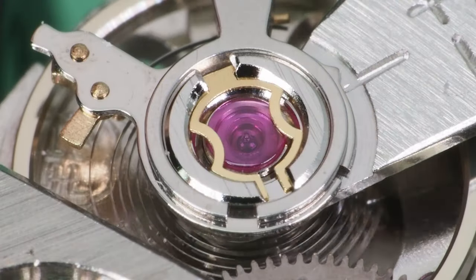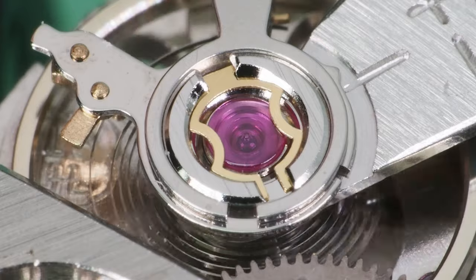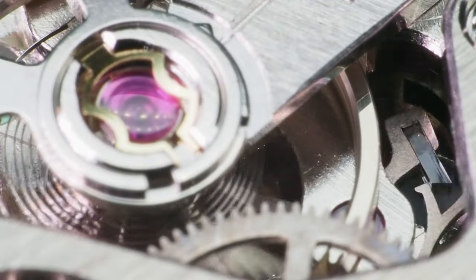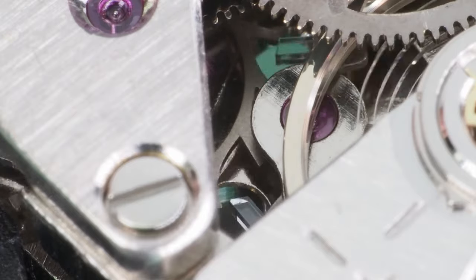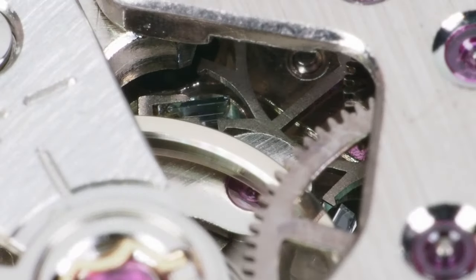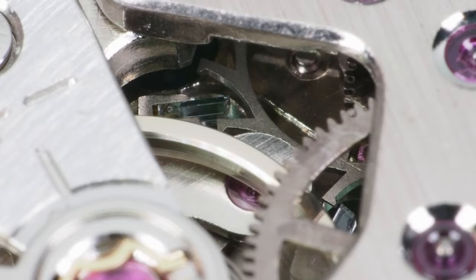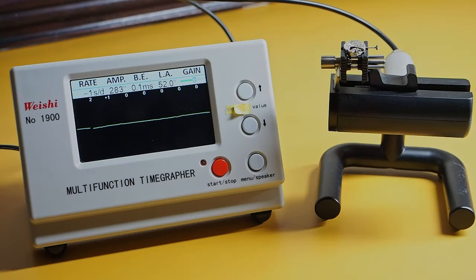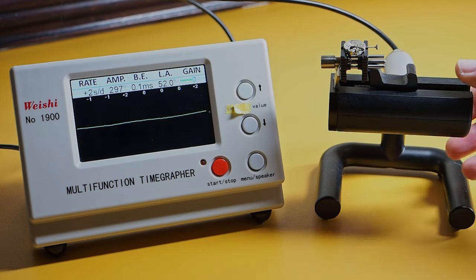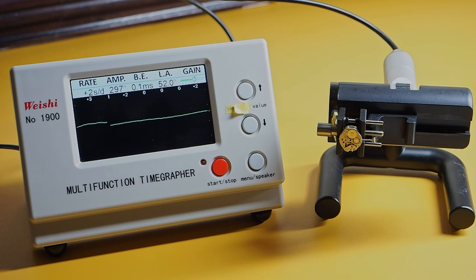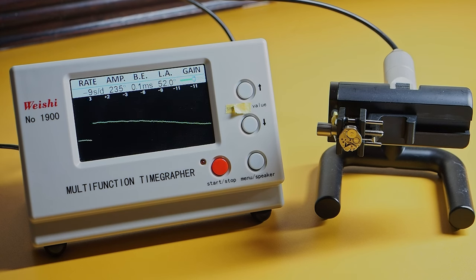Now let's have a look at the escapement in action. I've regulated it and it's been running for a few minutes. As you'd expect the timing and amplitude is better in dial down and dial up positions than when the movement is on its side but it's not running too badly for a standard unadjusted movement. I sped up the footage so you can see it in several positions.